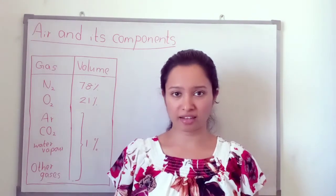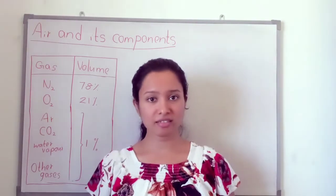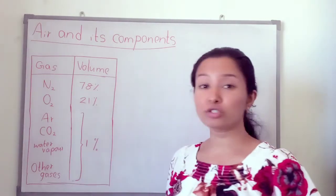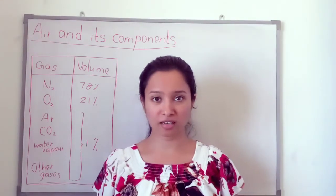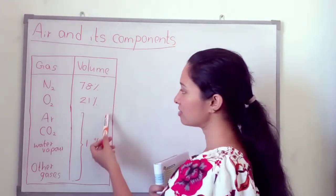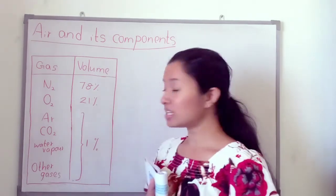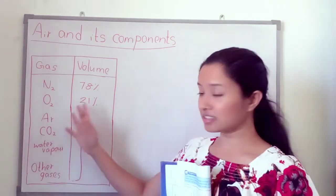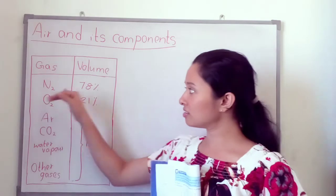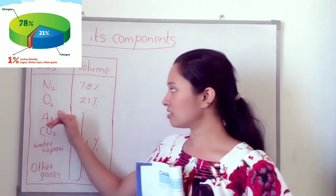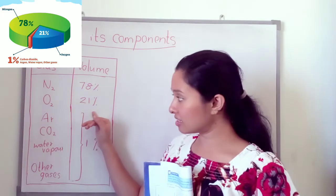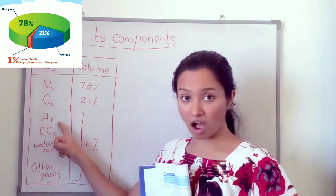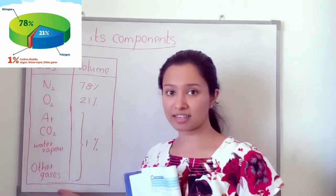Now let's look at air and its components. Among the five layers, the troposphere is the most important for us because we live there. The components in the troposphere are: nitrogen, oxygen, argon, carbon dioxide, water vapour, and other gases — along with their respective volumes.